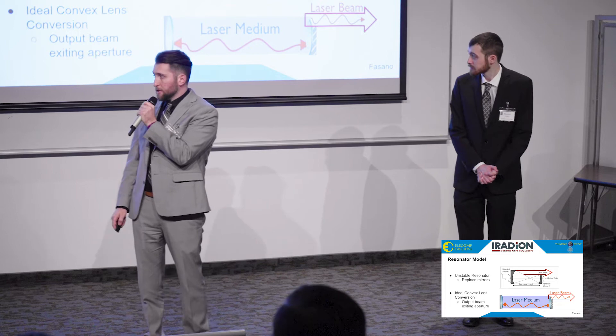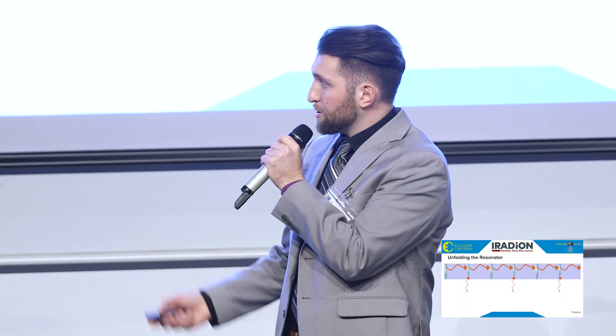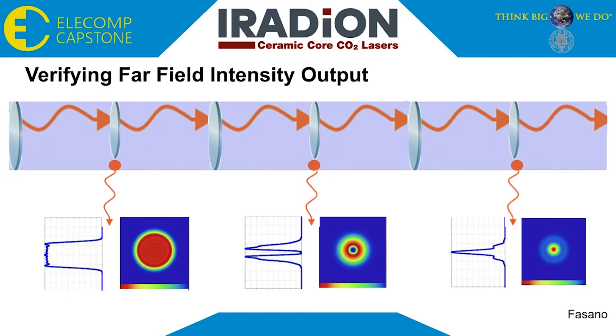To increase the distance of propagation, we use a method called unfolding the resonator. This is a system where we set up a periodic array of ideal convex lenses, and with each period some light escapes through the aperture. We expect that with increased distance of propagation, the beam will eventually become more and more ideal. We were able to verify this through our model, which shows that indeed, as the beam reaches sufficient distance, we do get the Gaussian output seen here, which is known as the far-field intensity output — the ideal laser beam.